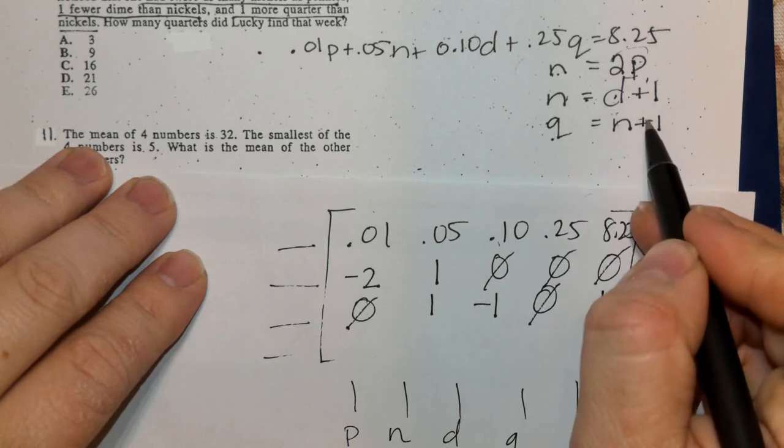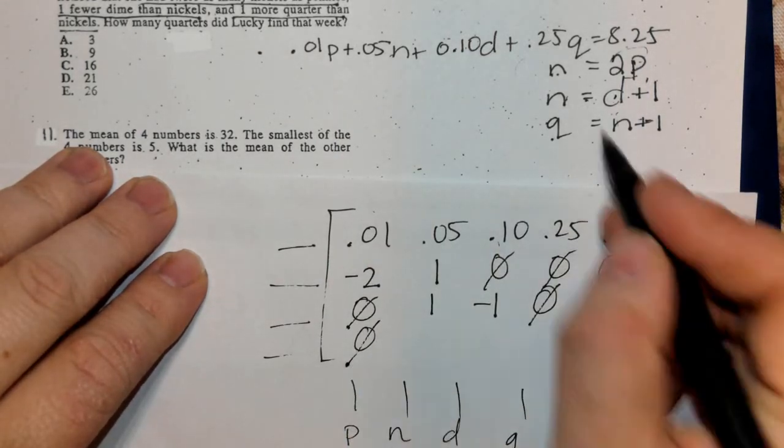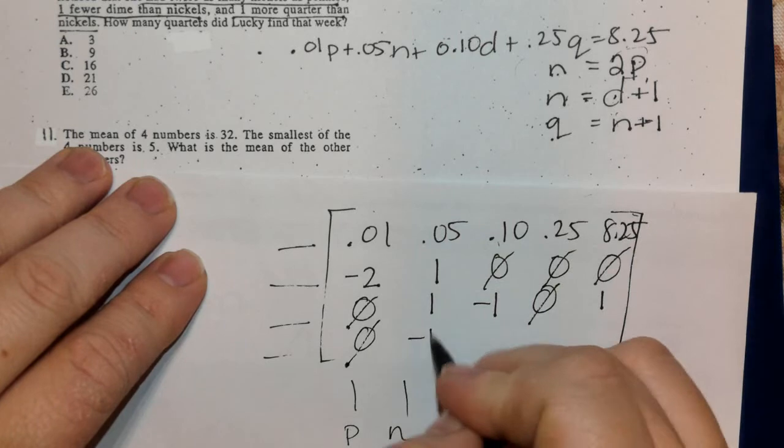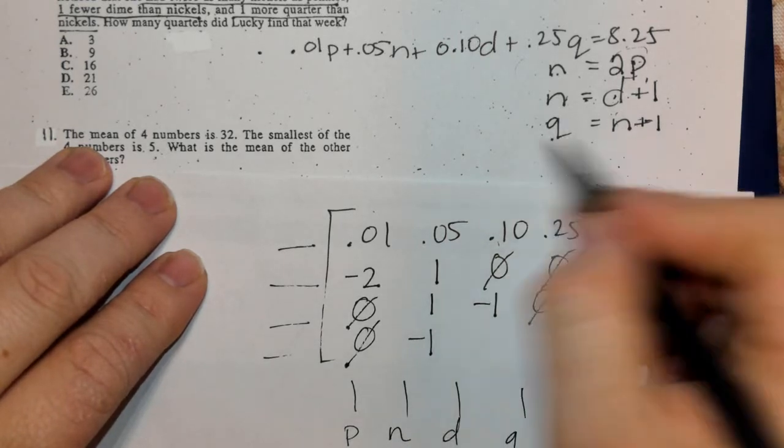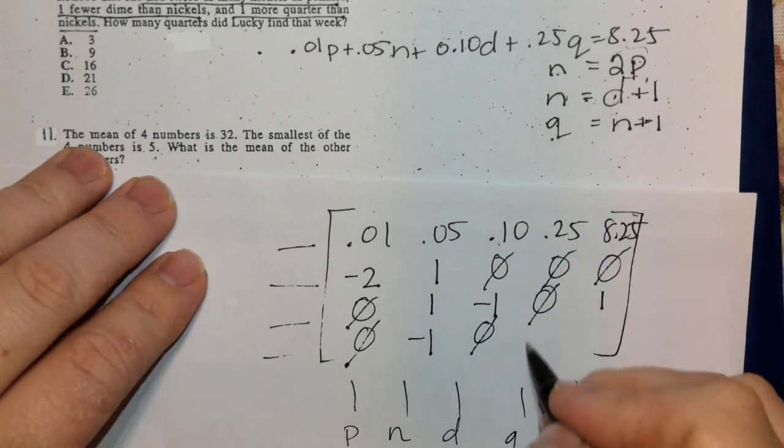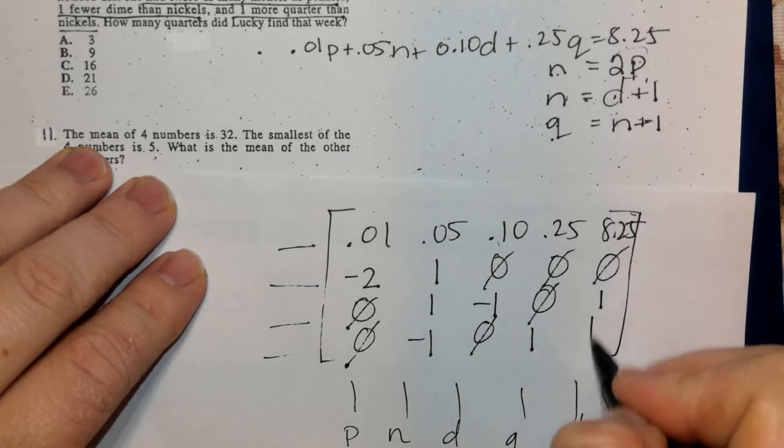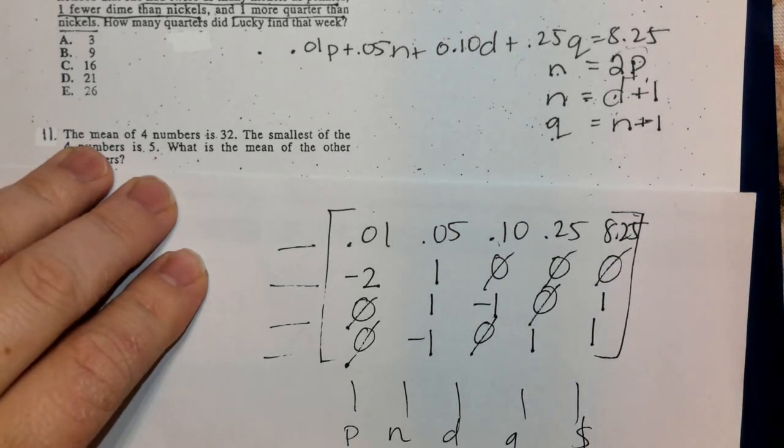In the last equation Q = N + 1, there are no P's. When the N comes across, it becomes negative 1. There are no D's, there's 1Q, and a positive 1.